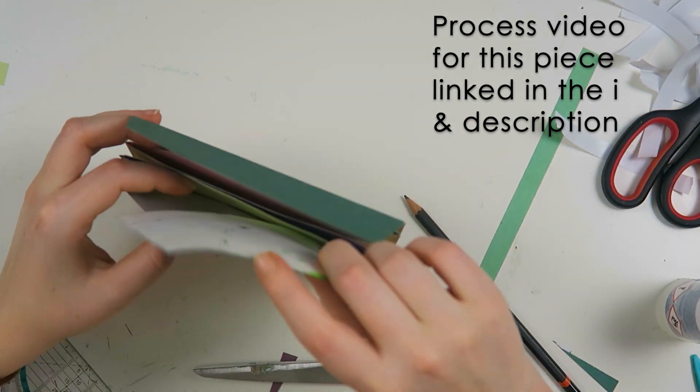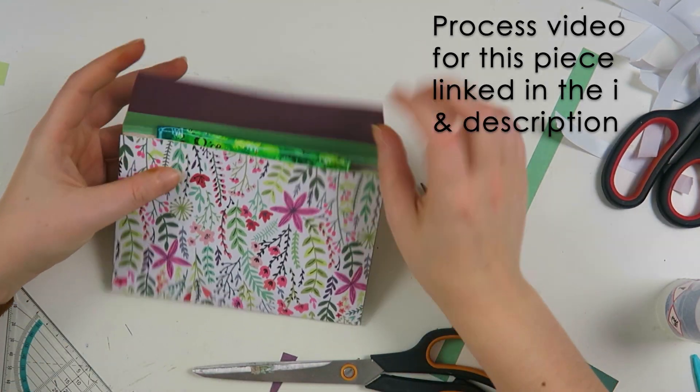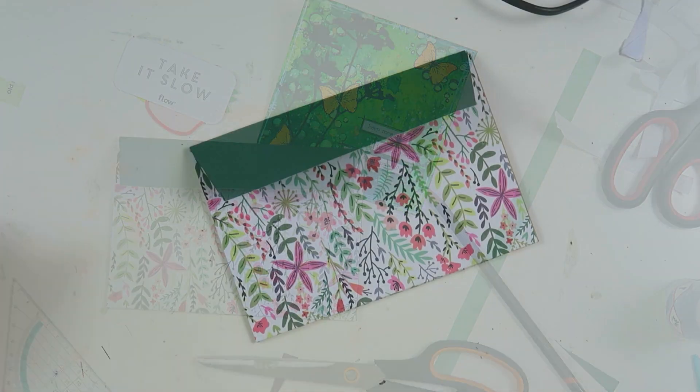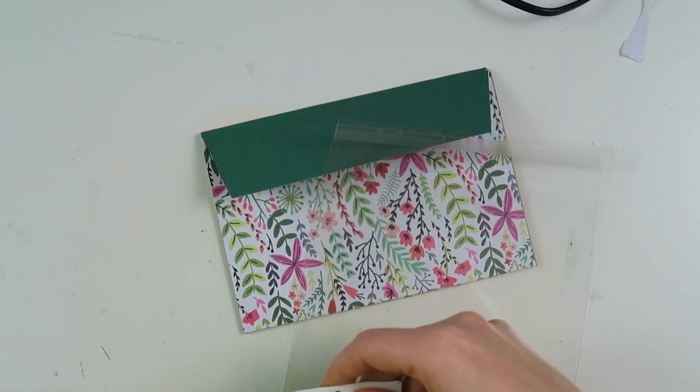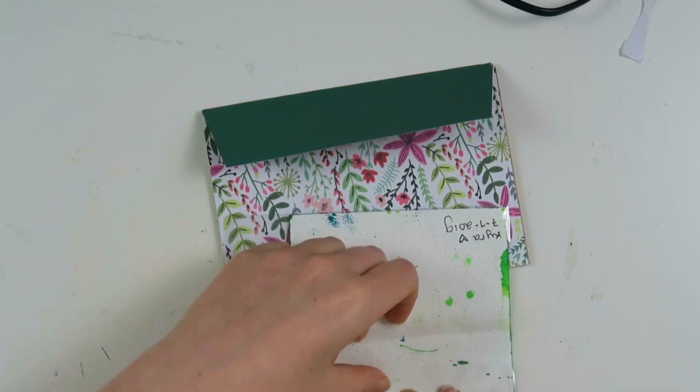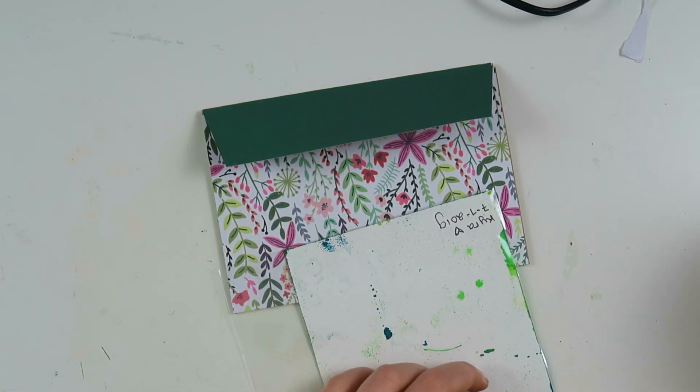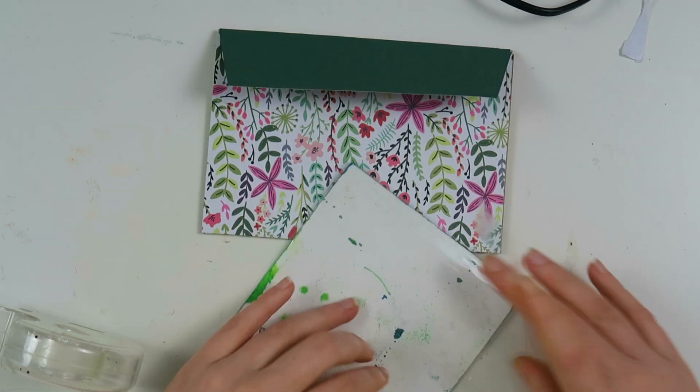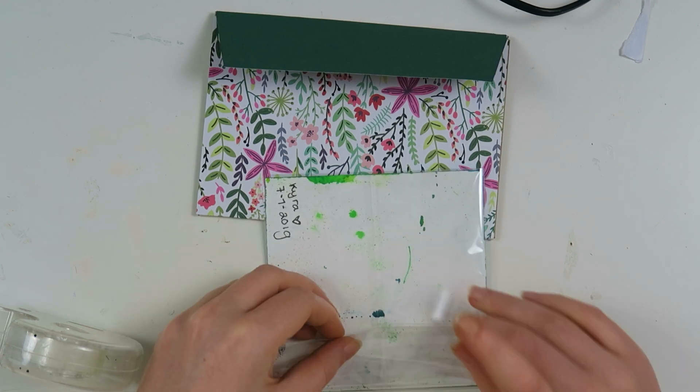This is the piece I was talking about, it doesn't fit in the envelopes but that's okay. I sent her this piece and the process video is linked in the i and down below. Now I'm going to package everything up and add some goodies in her accordion folder. I think she could also use this folder later on for stickers or something that she wants to organize.